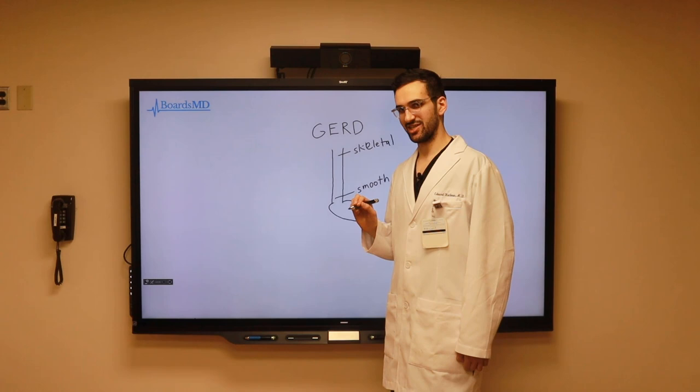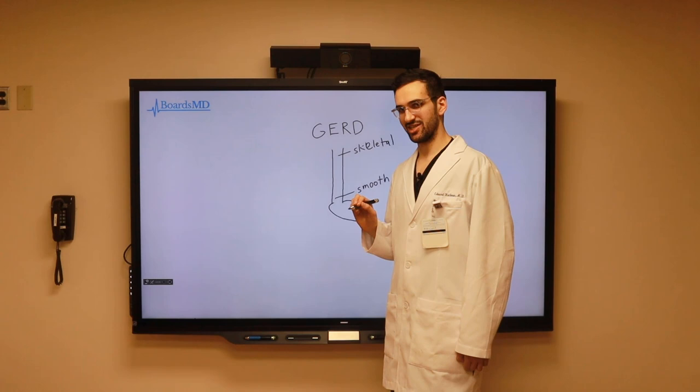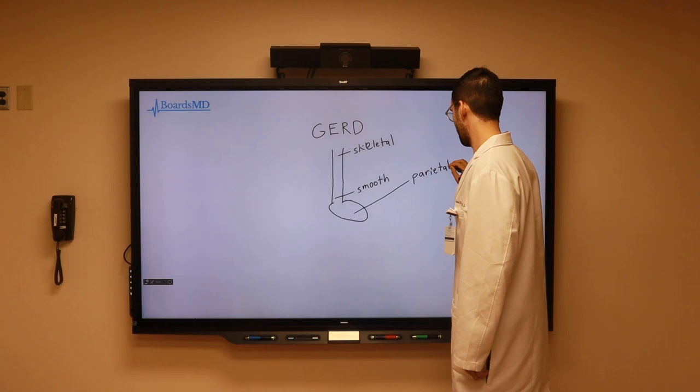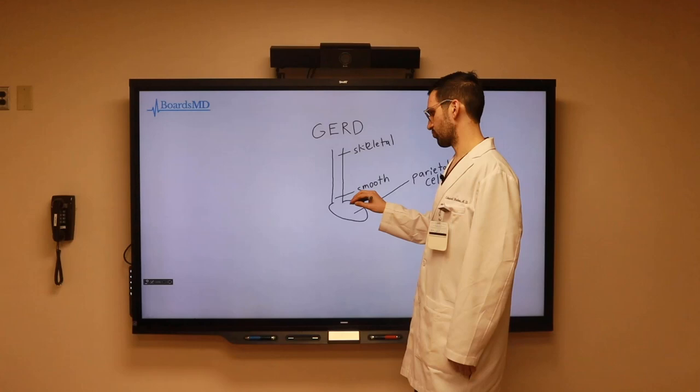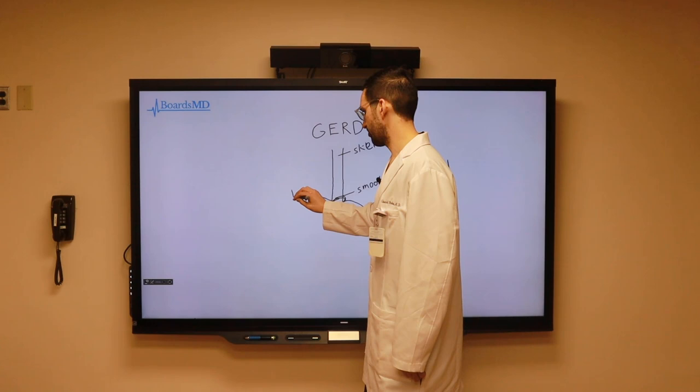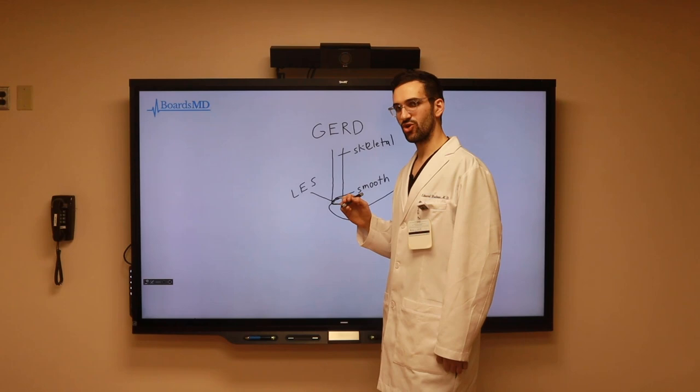When it comes to GERD, the key is that within our stomach we have parietal cells, which produce acid — often in the form of hydrochloric acid — and that acid has the potential to reflux into the lower esophagus. In a typical patient, however, we have the lower esophageal sphincter, also abbreviated as the LES. If the LES has sufficient tone, it essentially prevents this acid from refluxing into the lower esophagus.